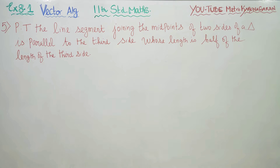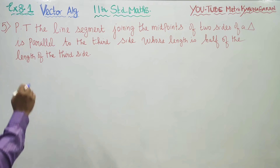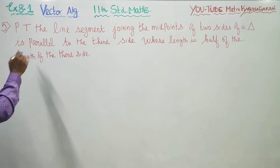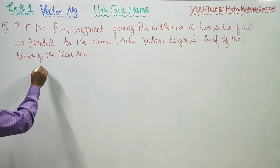Dear 11th standard students, in exercise number 8.1, sum number 5, prove that the line segment joining the midpoints of two sides of a triangle is parallel to the third side.